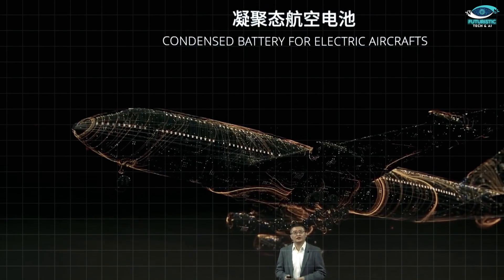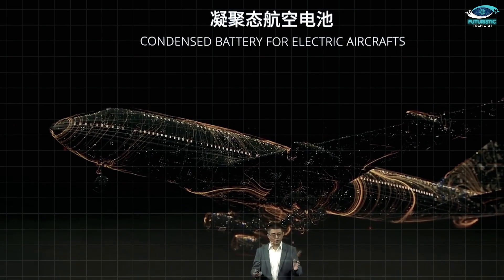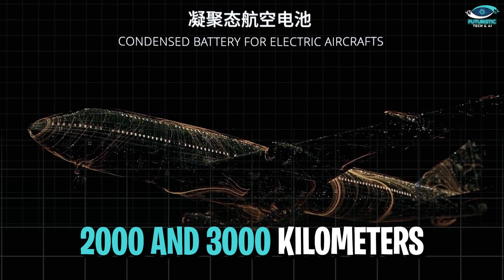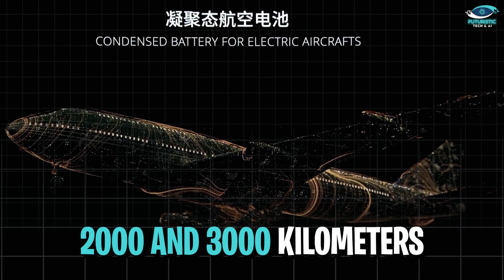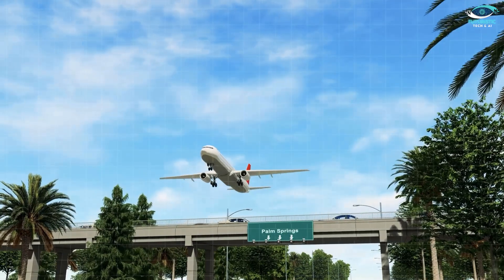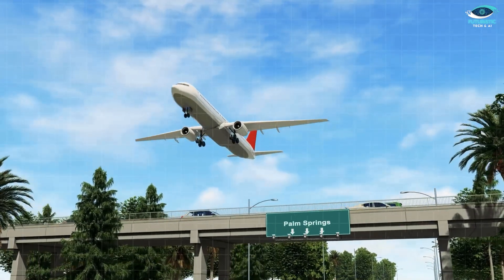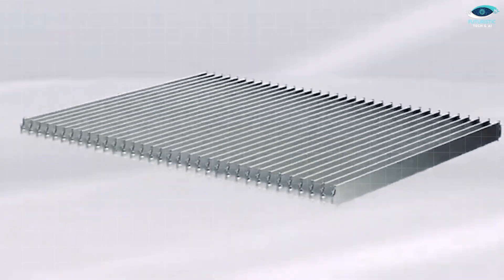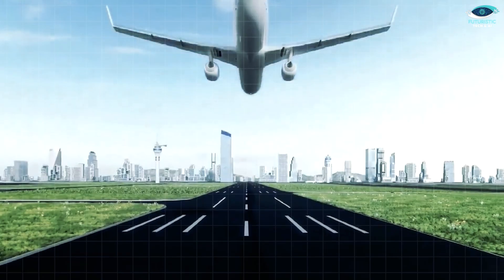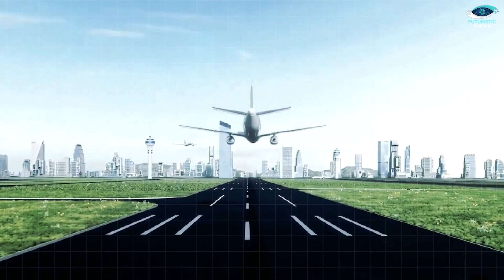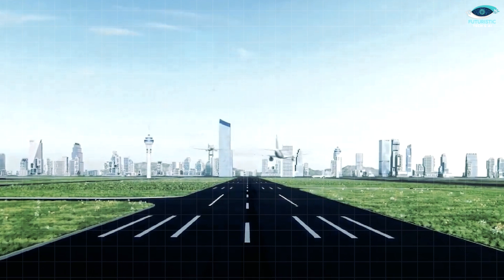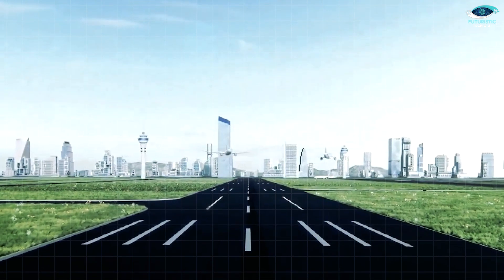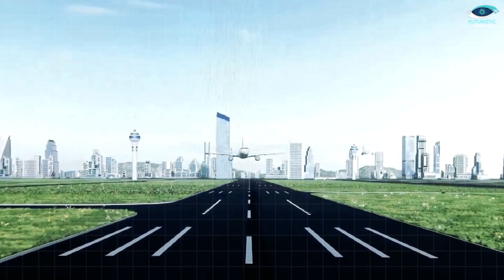The electrified passenger airplanes will likely use the condensed battery with a flight range of almost 2,000 to 3,000 km. CATL has already achieved the milestone of flying a 4-ton plane with ultra-high-density condensed batteries and is now moving towards an 8-ton electric plane in the upcoming years like 2027-2028.